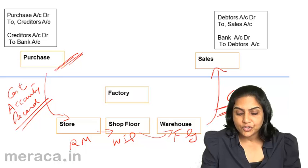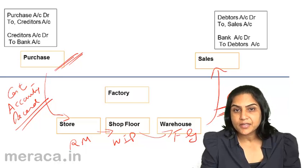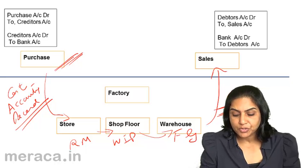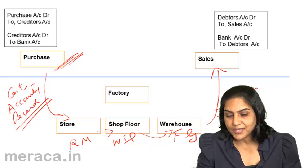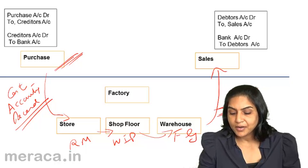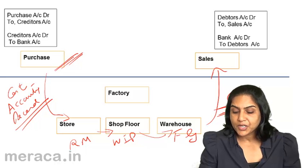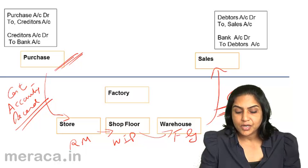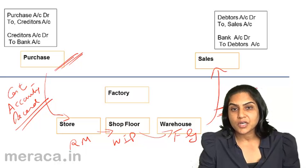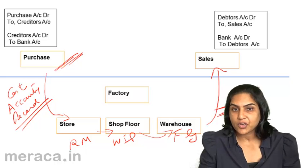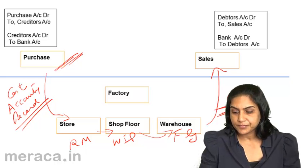Thus, control of materials, control of the production process, and control of waste are all managed through cost accounting records.